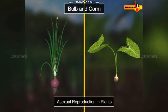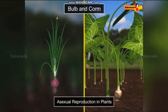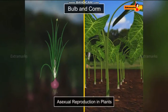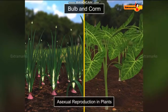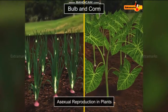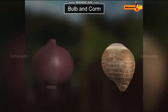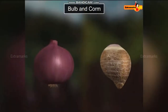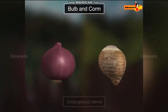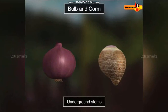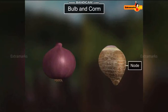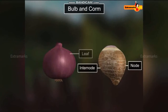Bulbs and corms are modified underground stems, which are involved in vegetative propagation in plants. As corm and bulb are modified underground stems, they bear nodes, internodes and leaves.